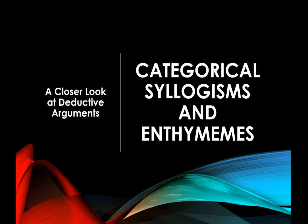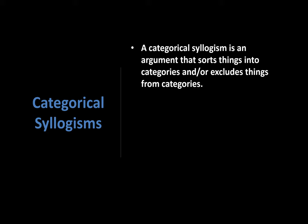This week we're going to take a closer look at categorical syllogisms and enthymemes. Enthymemes are simply incomplete categorical syllogisms that you're going to have to complete for validity. Categorical syllogisms are deductive arguments that sort things into categories or exclude things from categories. That's their purpose and function both as formal arguments and simply the way that we reason on a daily basis.